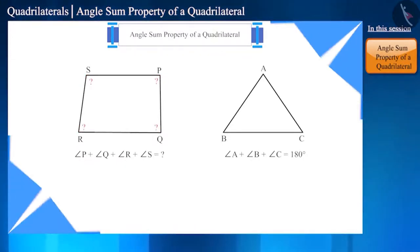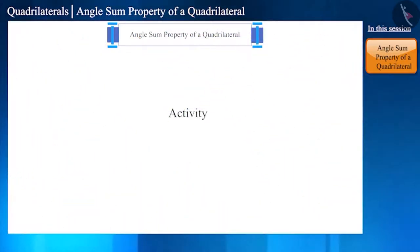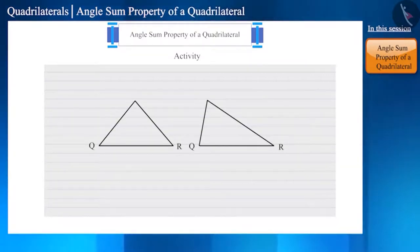Let's do an activity to understand it. Let's create two triangles with the same base on a paper. Let's name the first triangle as PQR and the second triangle as QRS. We know that the sum of the three angles of a triangle is 180 degrees.